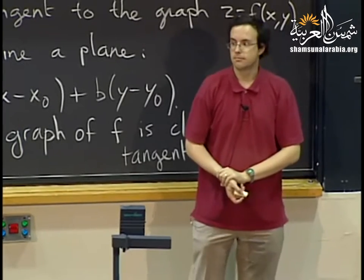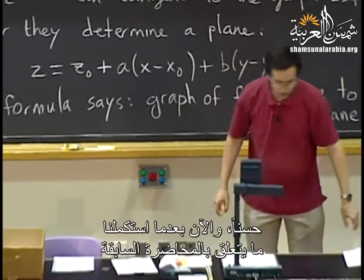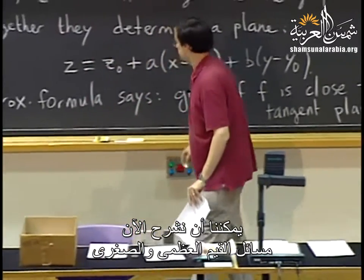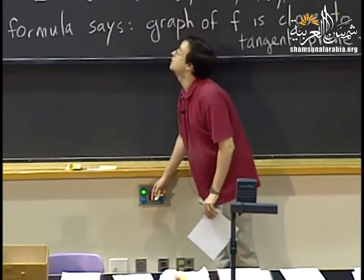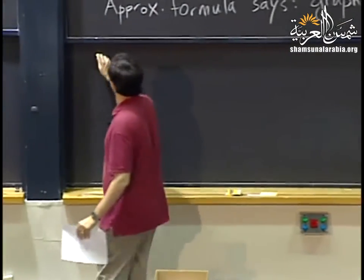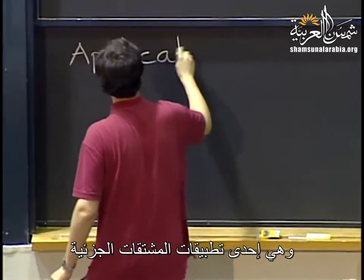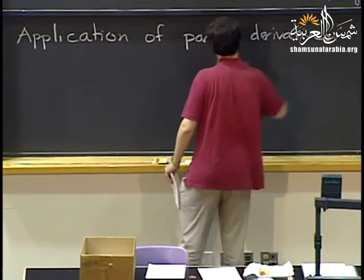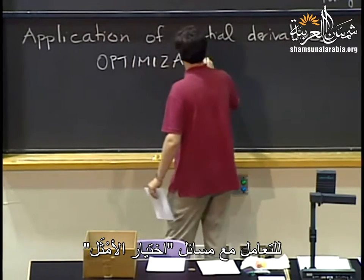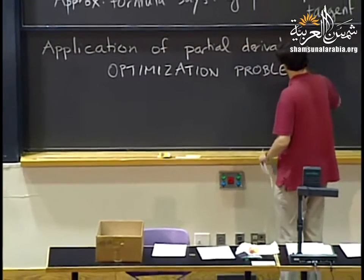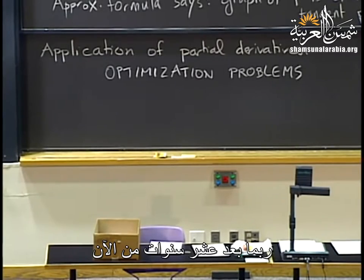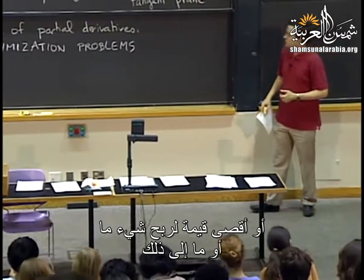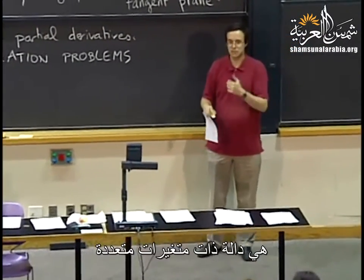The approximation formula says the graph of f is close to its tangent plane. We can use that formula to estimate how the value of f changes if I change x and y at the same time. Now that we have caught up with what we were supposed to see on Tuesday, I can tell you about max and min problems.